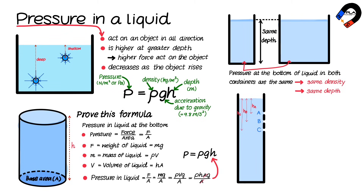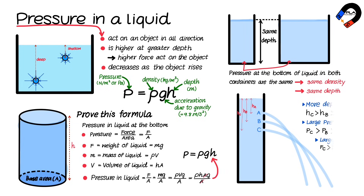A container has three holes labeled A, B, and C, which cause liquid to flow out. The liquid flows out at point C furthest because it experiences the highest pressure due to its greater depth. Conversely, the liquid flows the shortest distance from point A because it is shallower and has the lowest pressure.